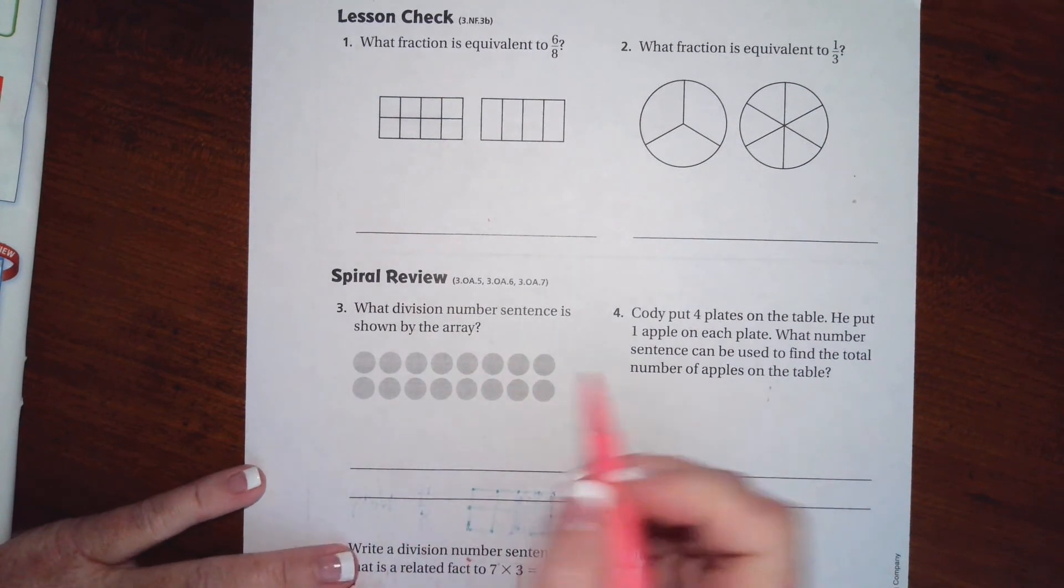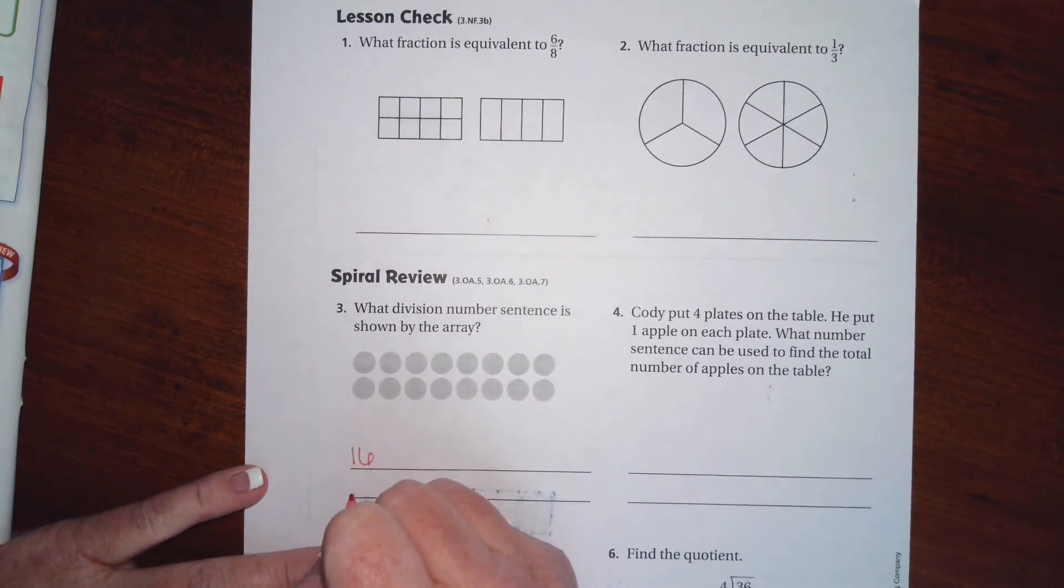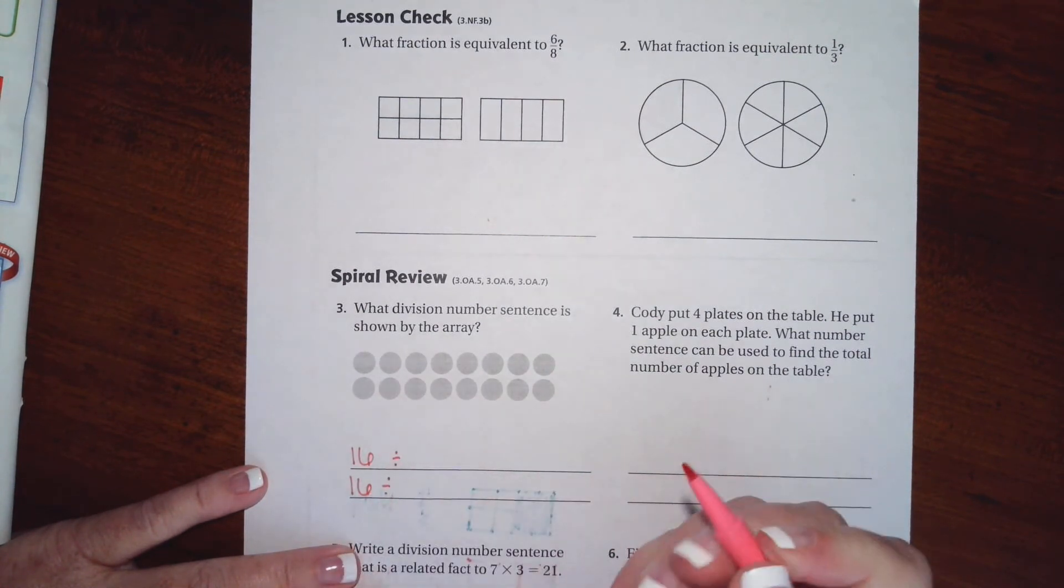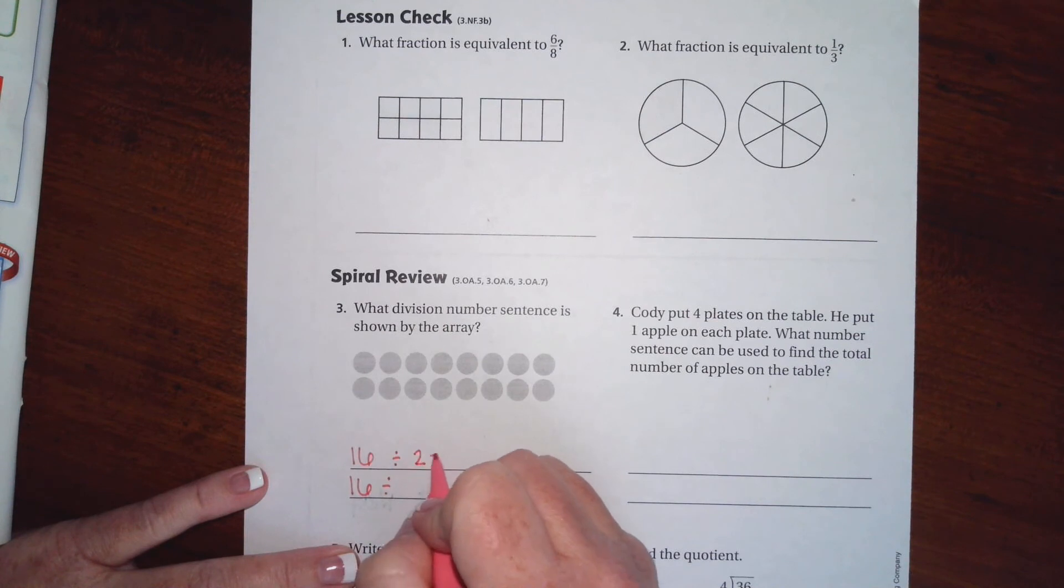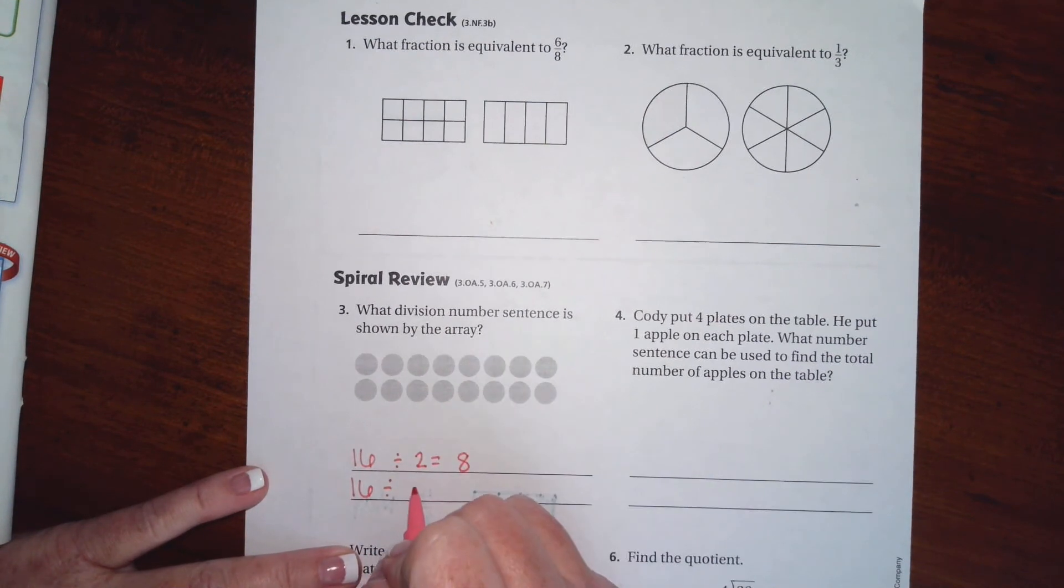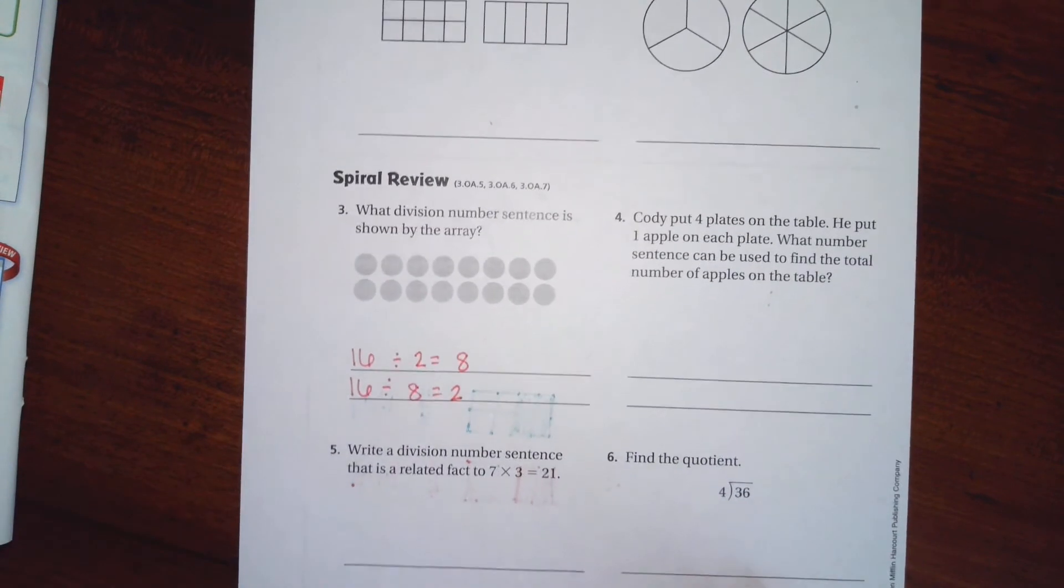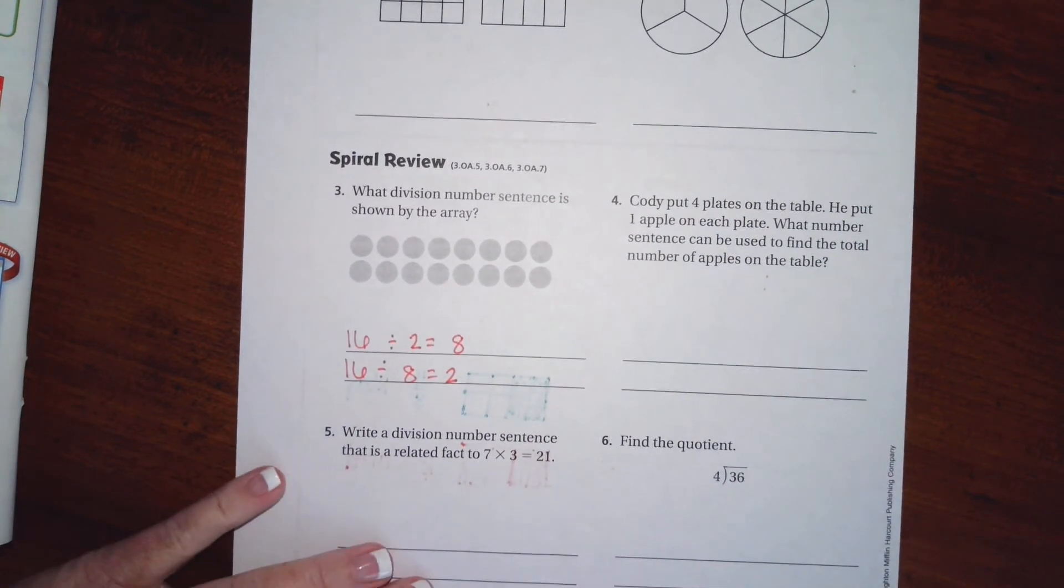So we have sixteen divided by... we can either divide that by two and get the eight, or we can divide it by eight and get the two. Take your pick, either one will do just fine.